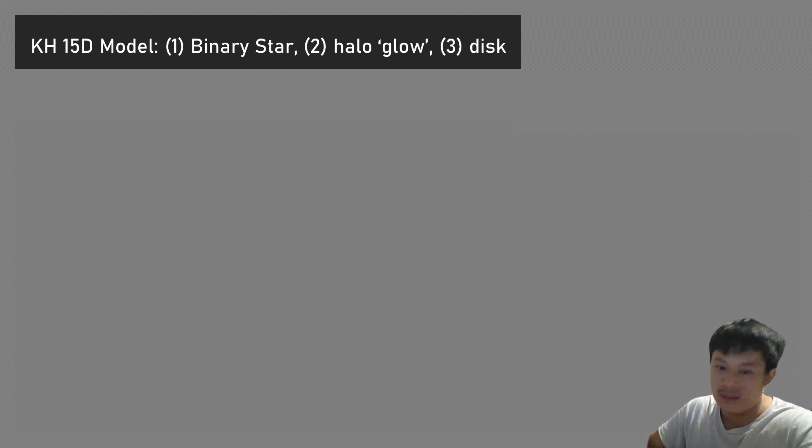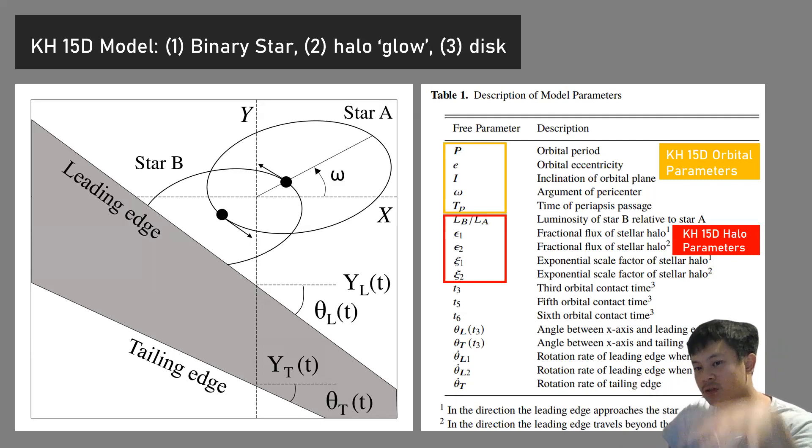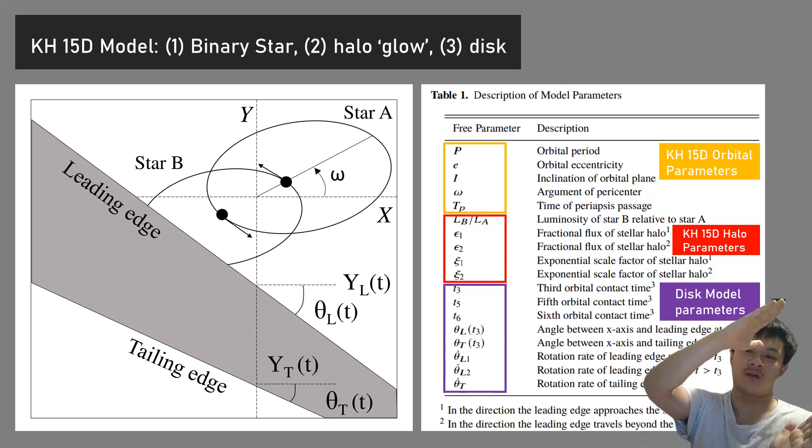Our model has three main components. You have the binary star of KH15D, star A and star B, with five orbital parameters associated with it. There's also a halo glow which describes how the brightness dips off exponentially beyond the star's radius. Finally, you have the disk model parameters related to this sheet of paper in the sky. You have two infinitely long edges that are perfectly opaque but can have different angles: theta_l for the leading edge and theta_t for the tailing edge. They have y_l and y_t values which are the y intercepts along the sky projected plane, evolving independently over time, allowing the disk to stretch or shrink.